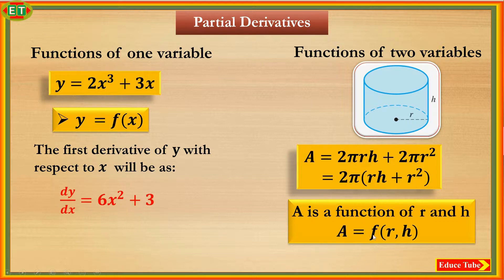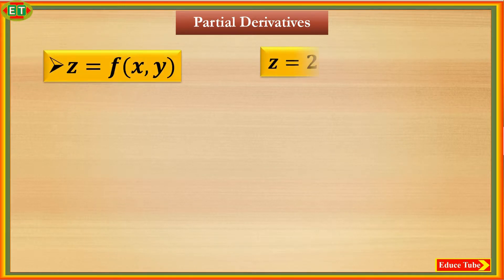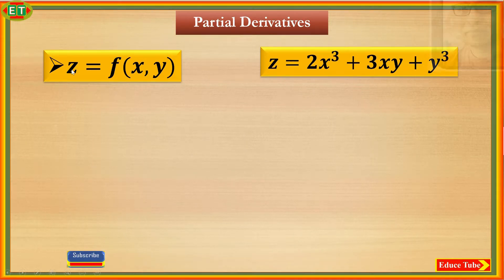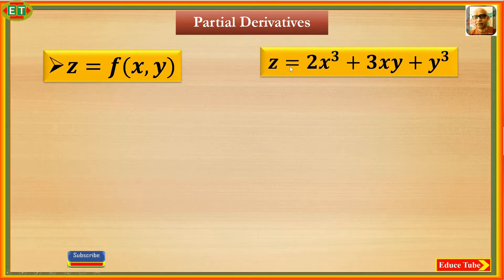The most important point from this equation is that the area will change if either or both of these change. In general, if we take a term z which depends on x and y, it can be represented as z equal to function of x and y. Here z is the dependent variable and x and y are independent variables. I take an example: z equal to 2x cubed plus 3xy plus y cubed.